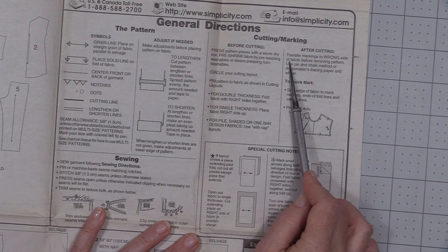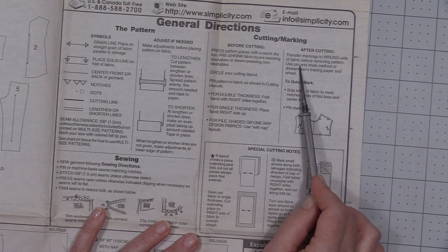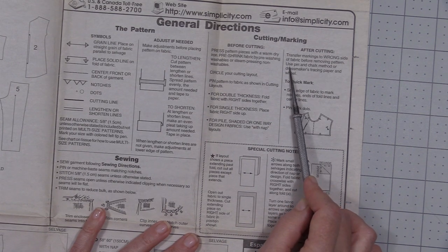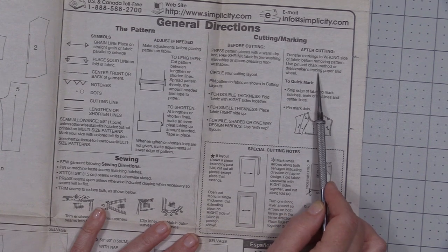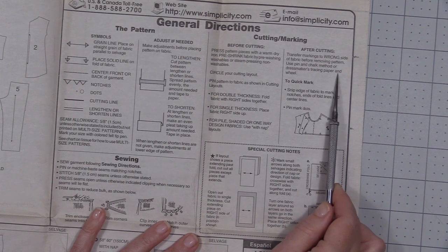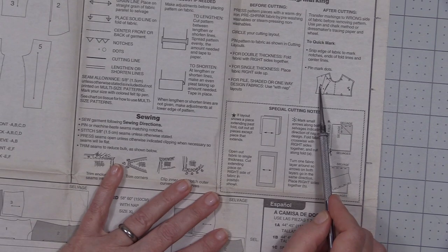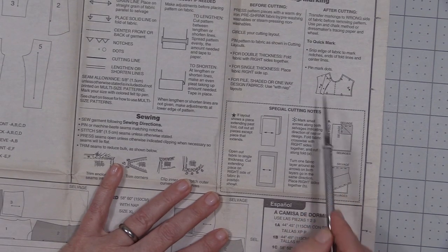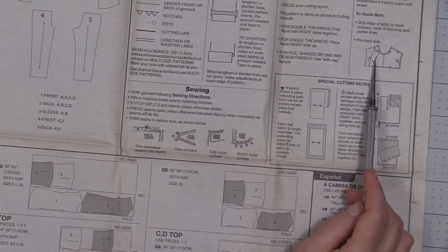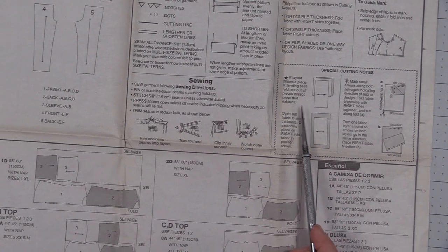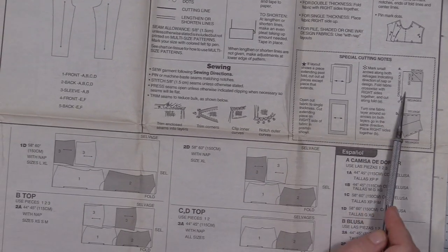After we cut our fabric out we're going to transfer our markings to the wrong side of the fabric before removing the pattern. We're going to use pins and/or chalk, our preferred method, and/or a tracing wheel and paper. This shows us how to mark and we will be marking a few things on our shorts. This shows you any type of special cutting layout that we need to be aware of.